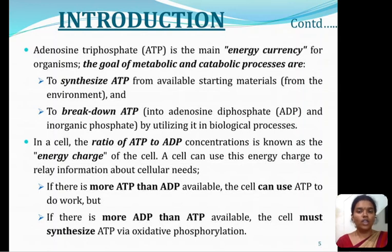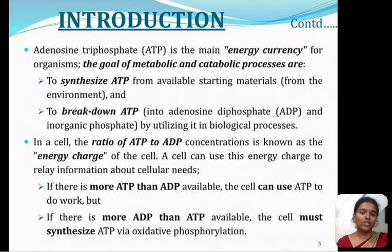ATP — adenosine triphosphate — is the main energy currency for organisms. The goal of metabolic and catabolic processes is the synthesis of ATP from available starting materials from the environment, and to break down ATP into adenosine diphosphate and inorganic phosphate by utilizing it in biological processes. In a cell, the ratio of ATP to ADP concentration is known as the energy charge of the cell. A cell can use this energy charge to relay information about cellular needs. If there is more ATP than ADP available, the cell can use ATP to do work. But if there is more ADP than ATP available, the cell must synthesize ATP via oxidative phosphorylation.